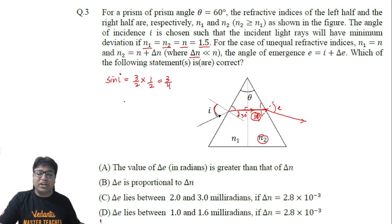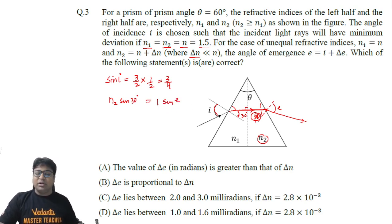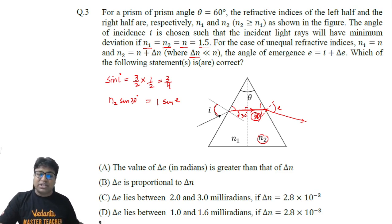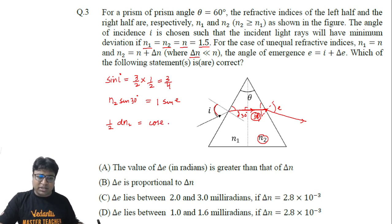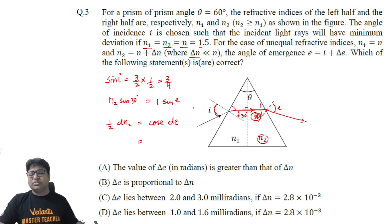Writing Snell's law at the second point of strike: n2 × sin 30° = 1 × sin e. Now we differentiate this equation — since sin 30° remains fixed at 30°, it becomes (1/2) × dn2 = cos e × de.